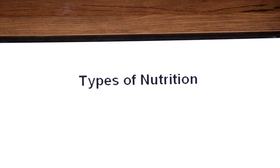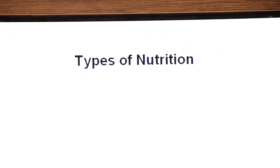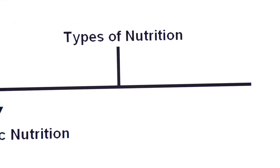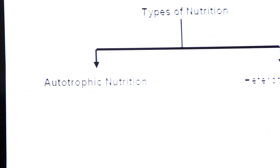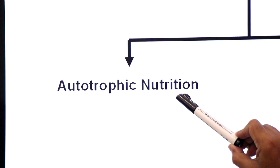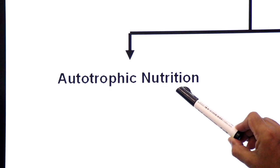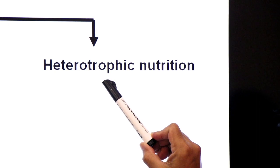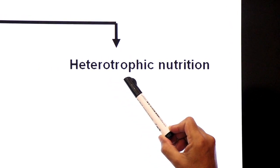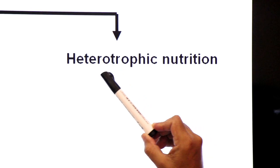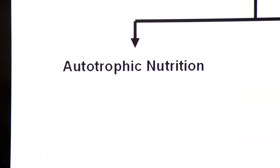Now, types of nutrition. You are very familiar with two types: autotrophic nutrition and heterotrophic nutrition. In autotrophic nutrition, organisms are able to make their own food. But in heterotrophic nutrition, organisms are not able to make their own food and depend upon others. Let's start with autotrophic nutrition.